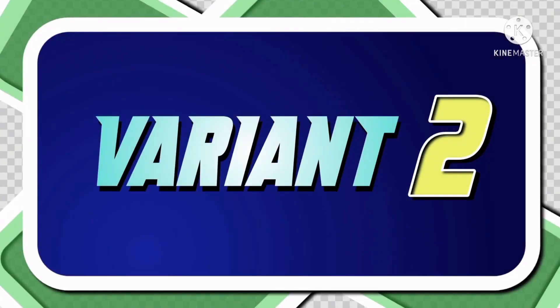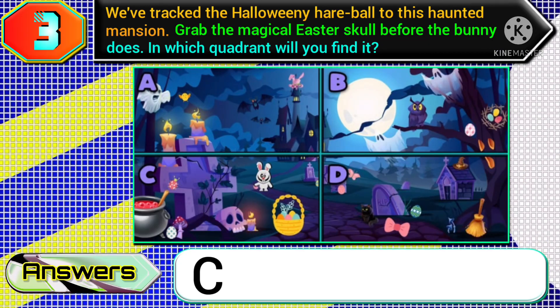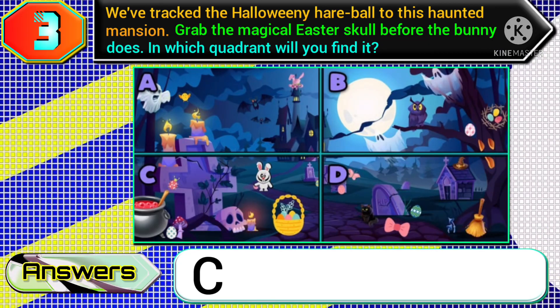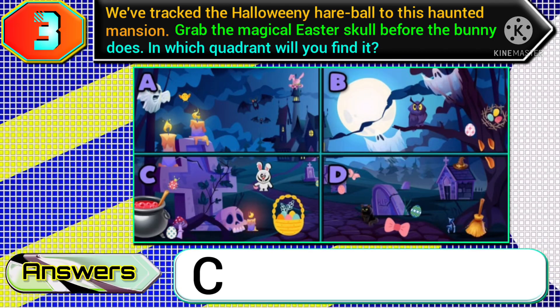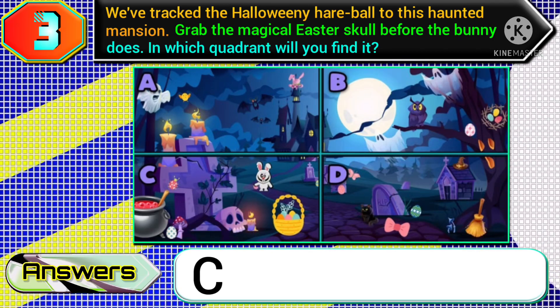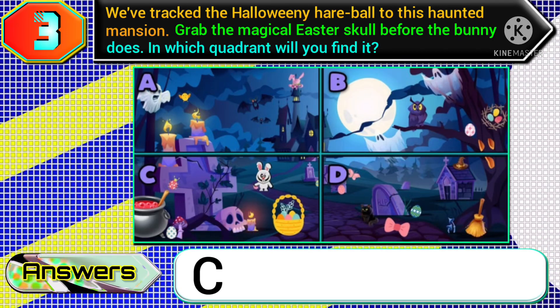Next, variant two: if you get the question 'grab the magical easter skull before the bunny does,' then you need to choose option C.